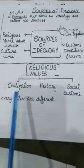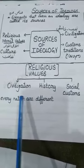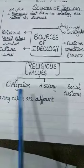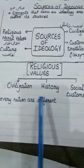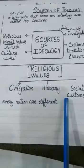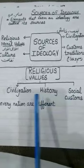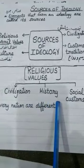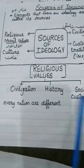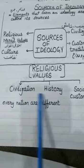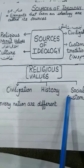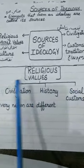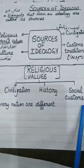According to religious values, every nation has their own culture, civilization, history, social customs, traditions, and occasions — that is why their ideology is also different. Just like we are Muslims, we follow the religion Islam. We are totally different from Hindus. Our culture, history, our Quran and Sunnah are totally different from others, and these differences make us unique and separate.